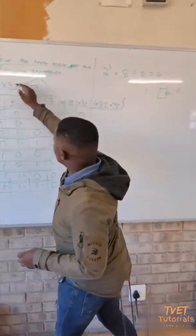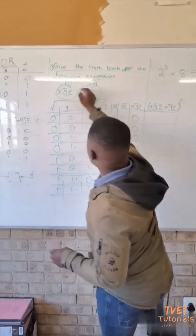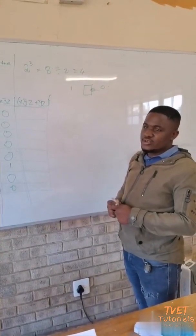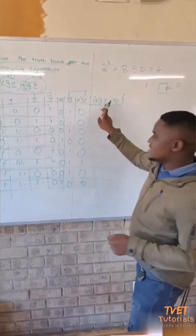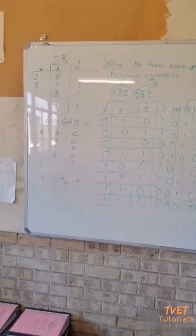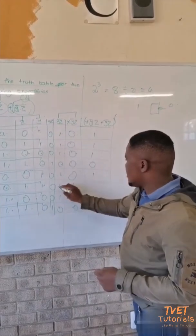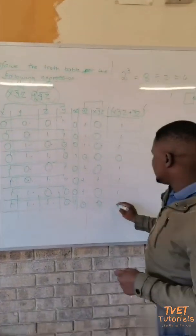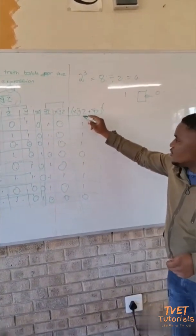Now we have to combine the two sub-expressions. They are joined by an OR gate, not an AND gate — OR gate means addition. So we add the two columns: one and zero gives one; one gives one; one gives one; we get zero; one; one; one; we get zero. This gives us the final possible output for this expression.